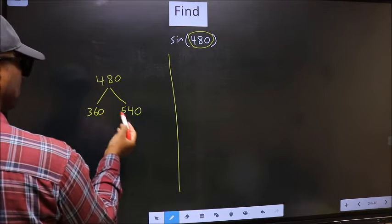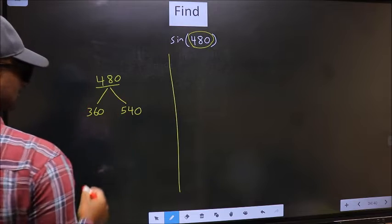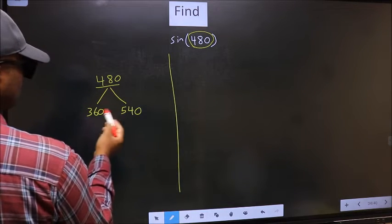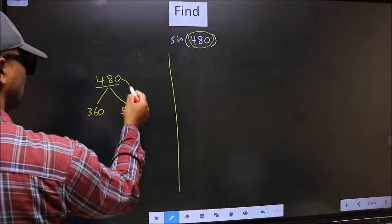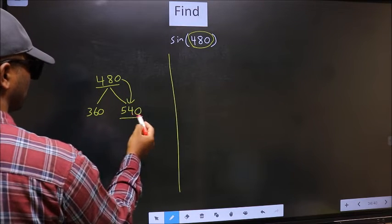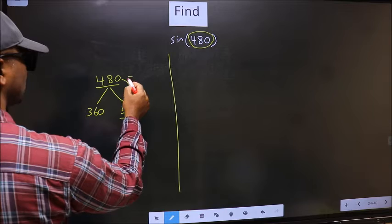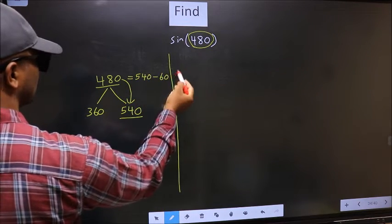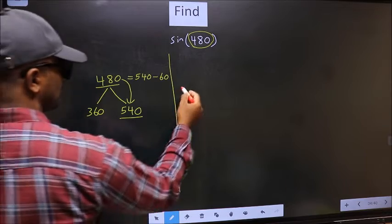Between these two numbers, 480 lies. Next. Now 480 is close to which number? This is close to 540. So 480 now should be written as 540 minus 60.